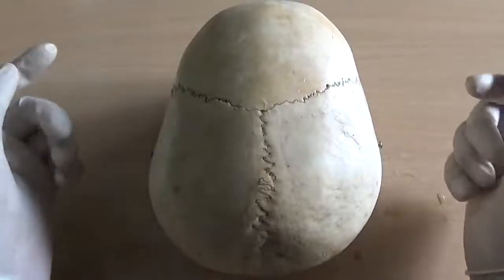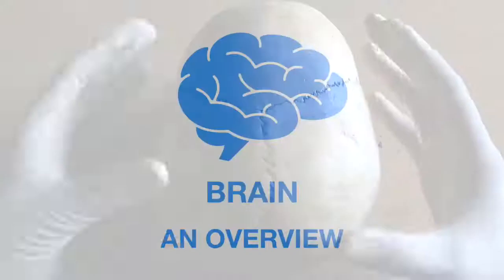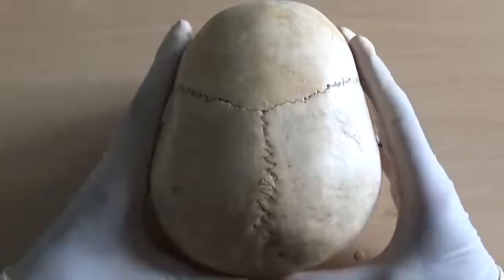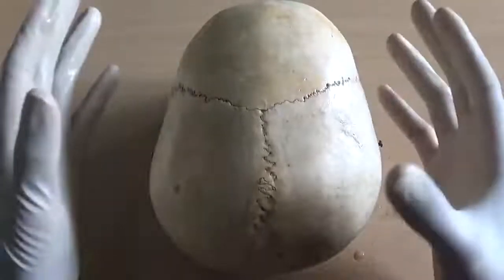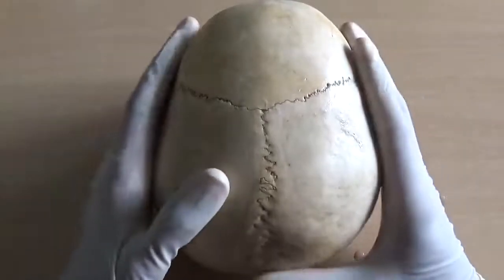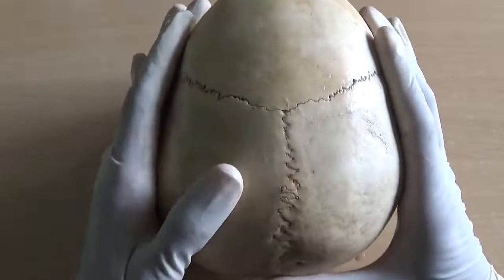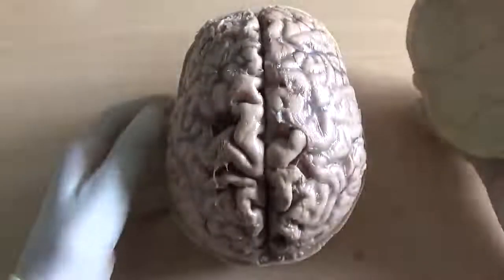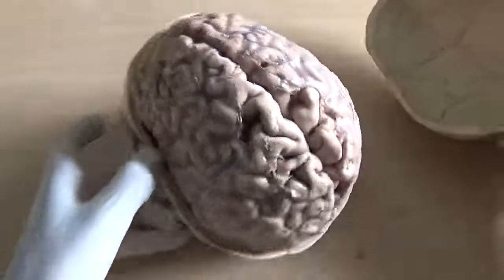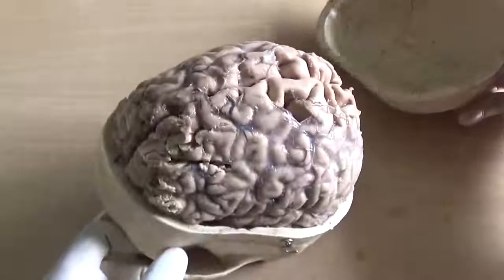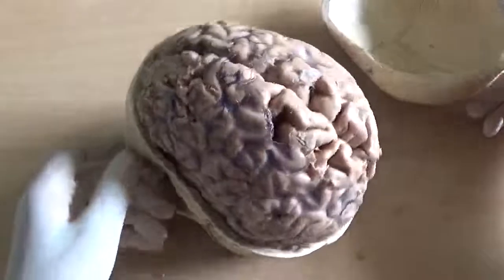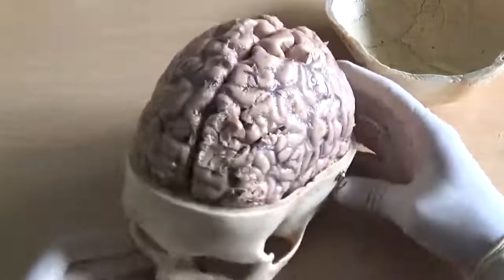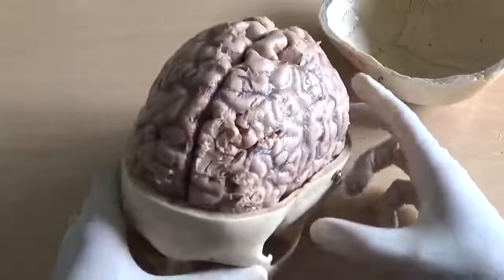Hello everyone. In this video we are going to discuss an overview of the brain — it will be a kind of introduction. This is the skull cap, and we need to remove the skull cap to see the underlying brain. Let me just open it — and this is what we have: the brain. This is just to give you an orientation about how it is lying within the brain box.